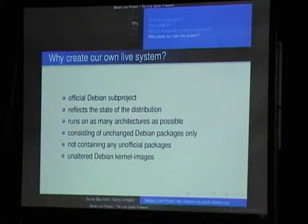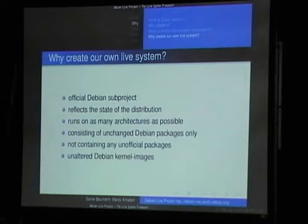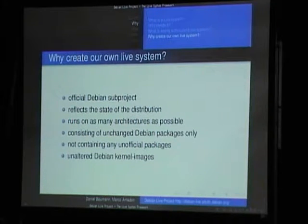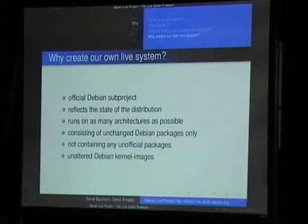Debian needs its own live system because it should be an official sub-project that reflects the official state of the distribution. If someone wants to know whether Debian testing today supports particular hardware, you can say: test this live CD — if it works for you, it works in Debian because it's the same. We want it to run on as many architectures as possible. We do not change packages. We convince Debian maintainers to fix their packages so they work on a live system too. We do not include unofficial packages, and most importantly we use the normal unchanged Debian kernel.